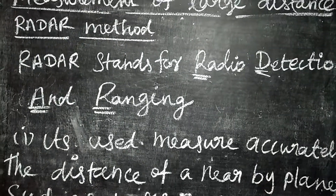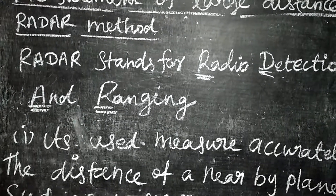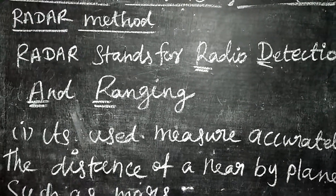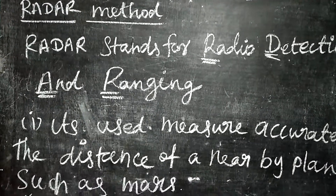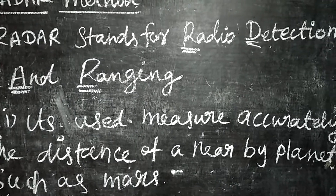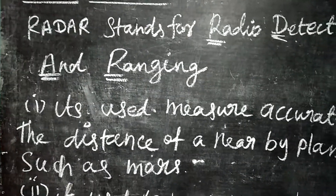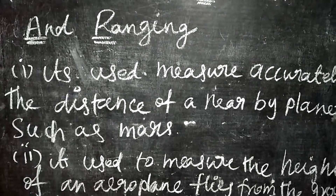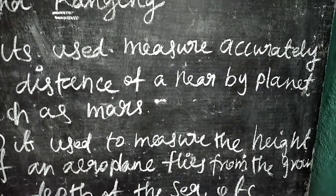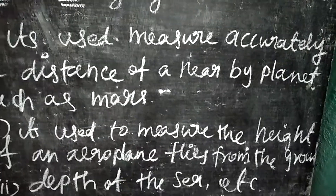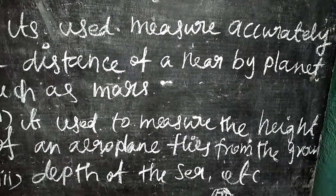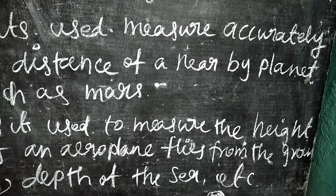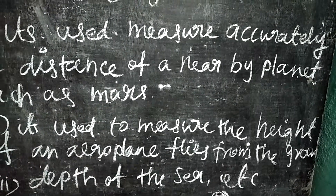The second method is the radar method. Radar stands for radio deduction and ranging. With the help of the radar method, we can accurately measure the distance of nearby planets such as Mars. It is also used to measure the height of an aeroplane above the ground, the depth of the sea, and for tracking satellites.